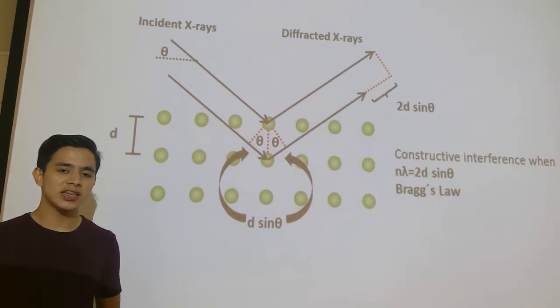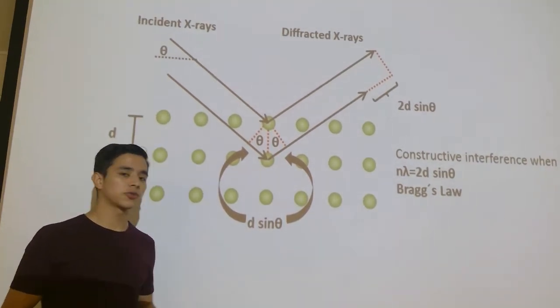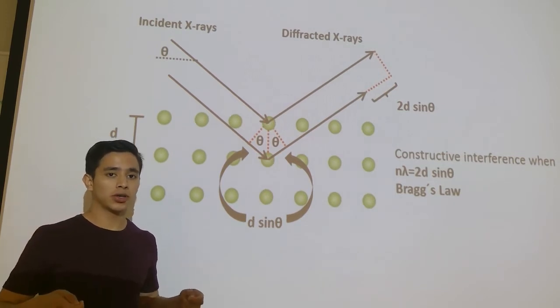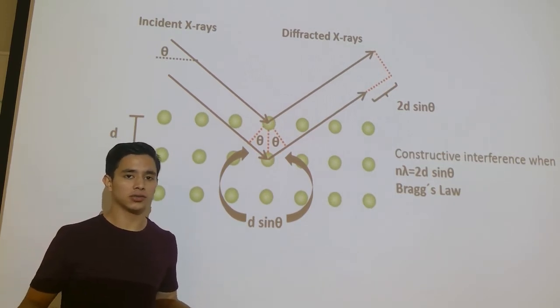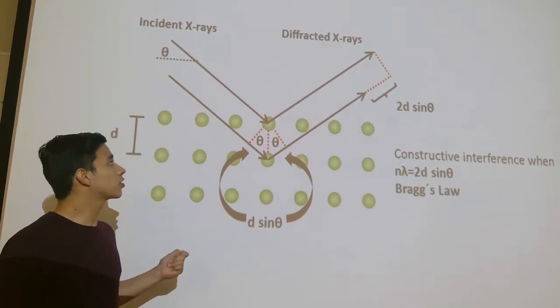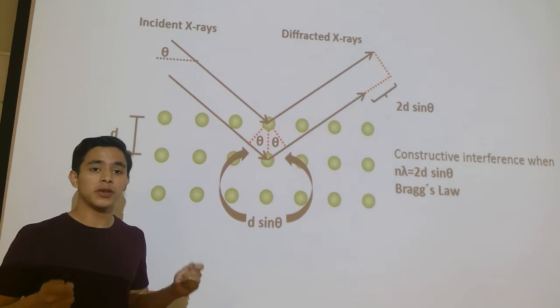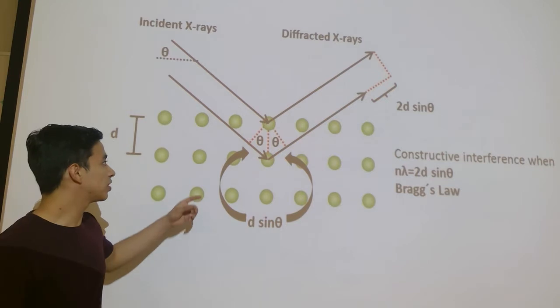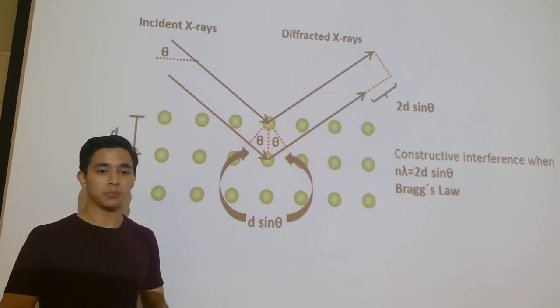And what does this have to do with X-rays? Well, X-ray diffraction is a technique that allows us to obtain information from the crystal structure of a solid or any material. And why do we use X-rays? Because their wavelength has the same magnitude or is really close to the magnitude of the distance between planes.